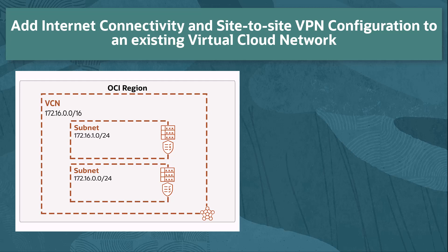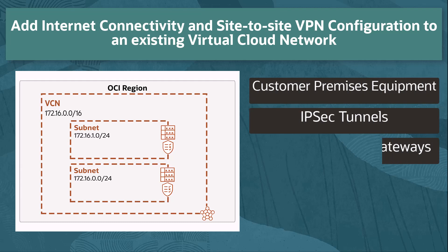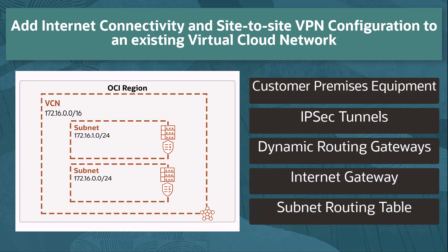This networking diagram represents the virtual cloud network that we will be adding networking service components to by running the VPN wizard. The VPN wizard will add a customer premise equipment or CPE, IPSec tunnels, dynamic routing gateway or DRG, internet gateway, and will modify existing routing tables and security lists.